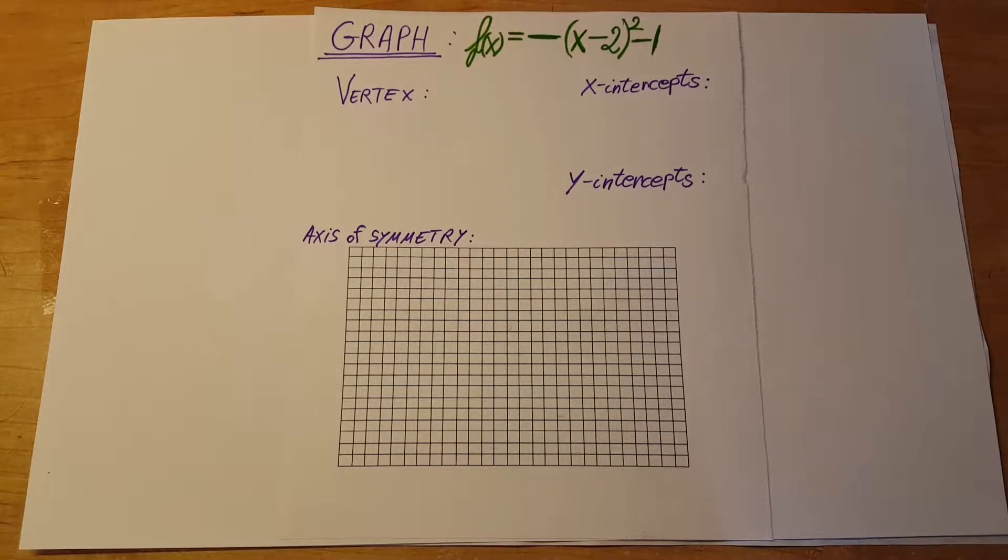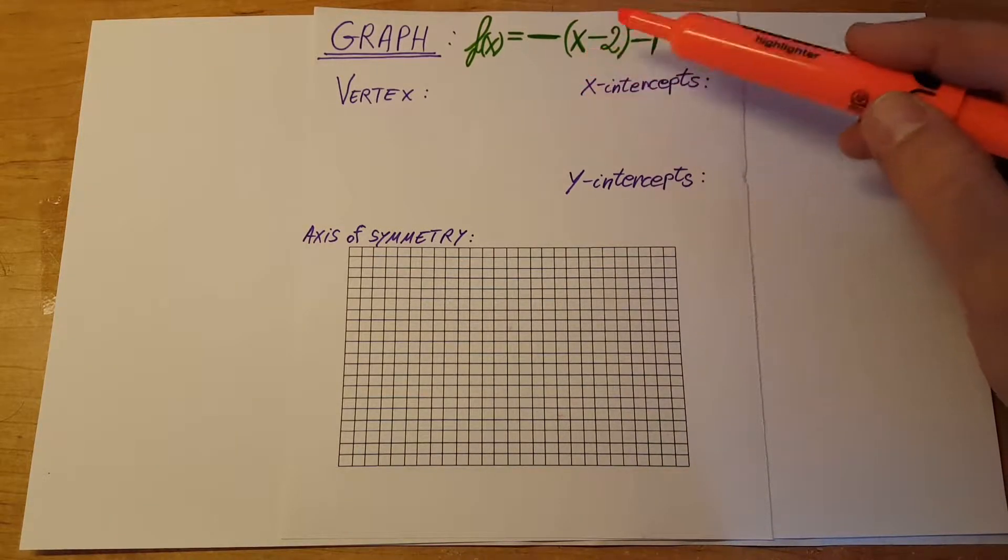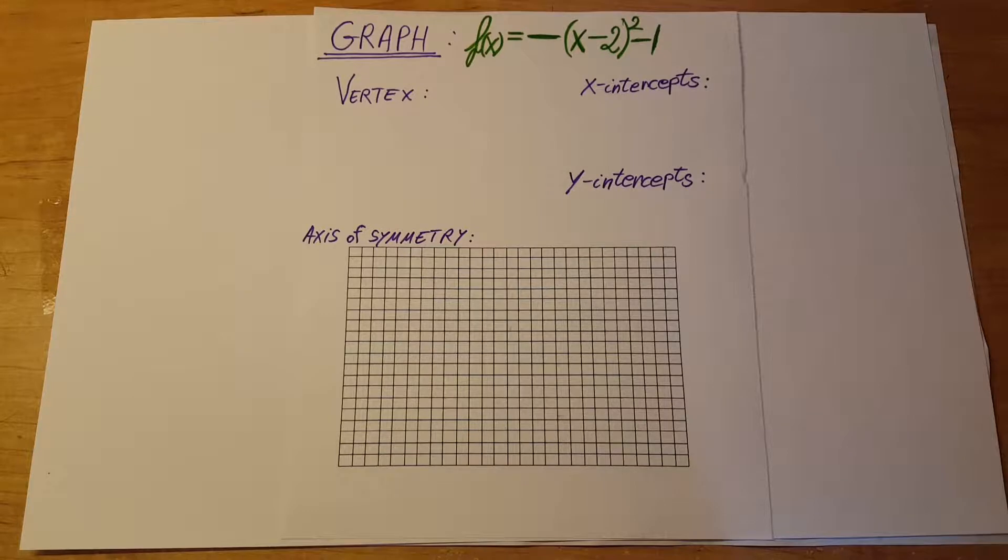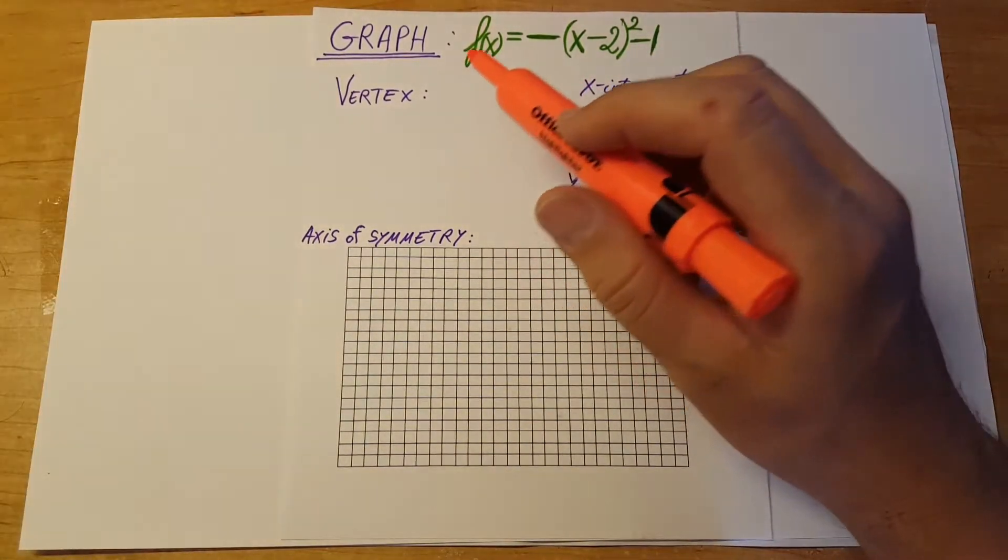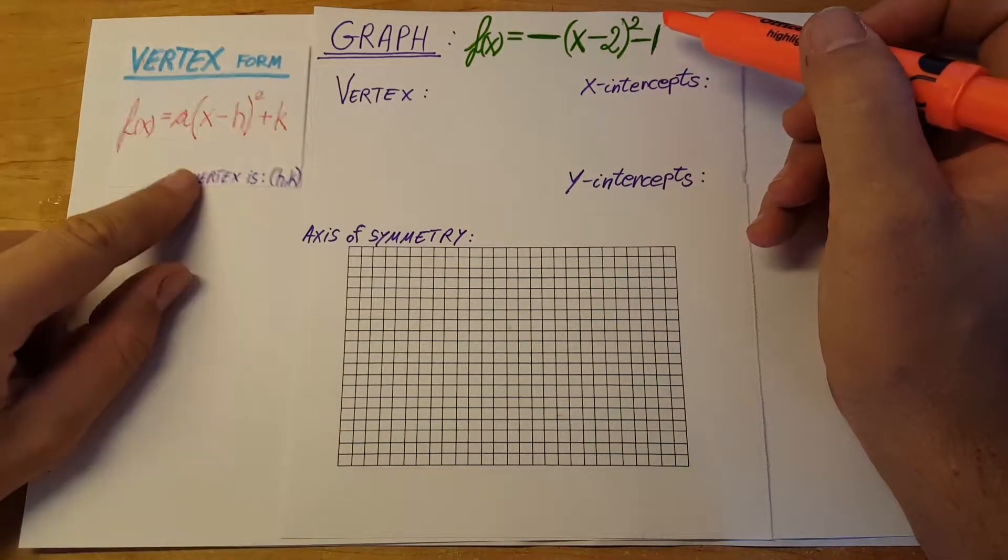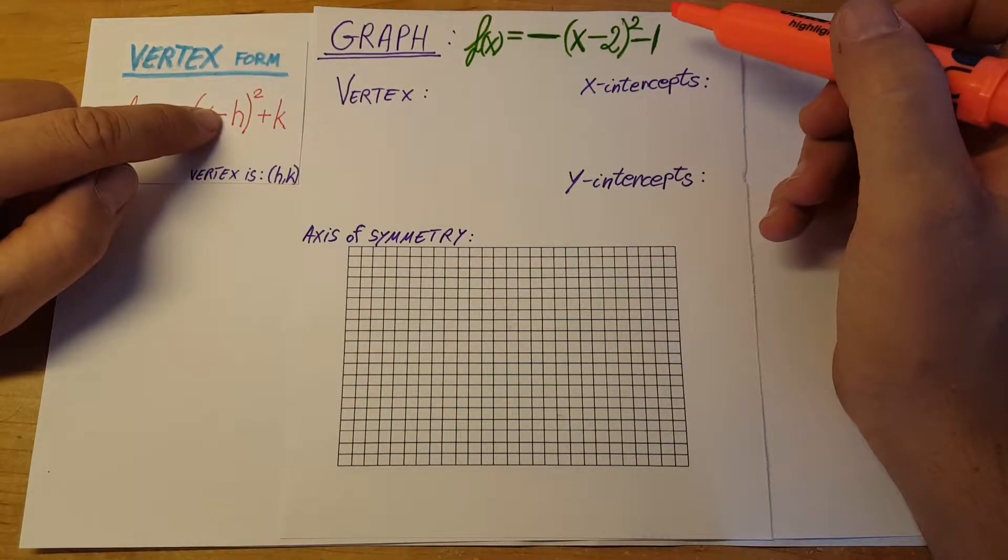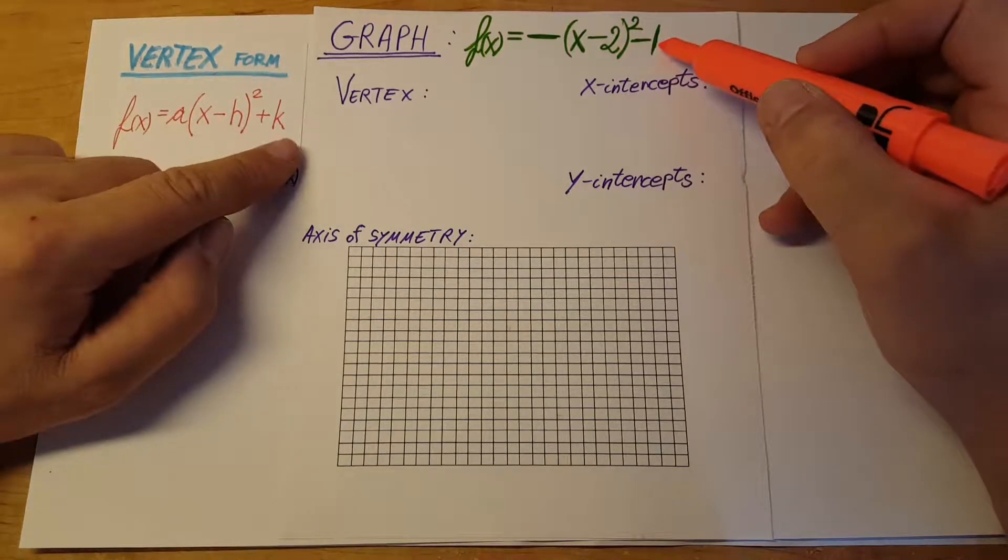Okay, let's graph this quadratic equation: f(x) = -(x - 2)² - 1. Let's find the vertex first. Since this is already in vertex form, we can take the values from here.